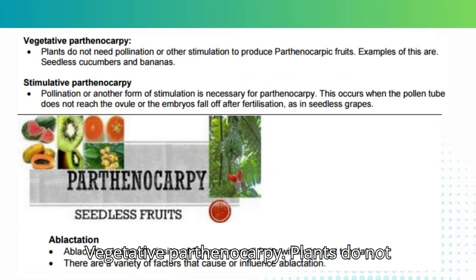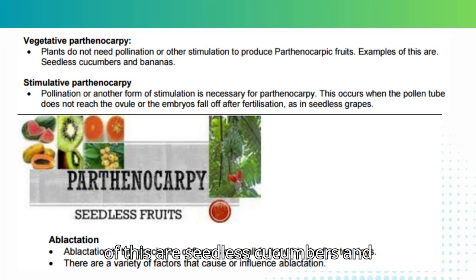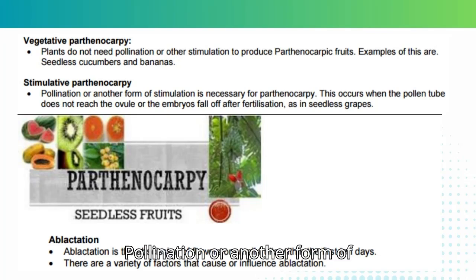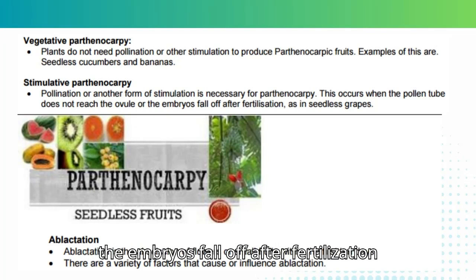Vegetative parthenocarpy: plants do not need pollination or other stimulation to produce parthenocarpic fruits. Examples are seedless cucumbers and bananas. Stimulative parthenocarpy: pollination or another form of stimulation is necessary for parthenocarpy. This occurs when the pollen tube does not reach the ovule, or the embryos fall off after fertilization, as in seedless grapes.